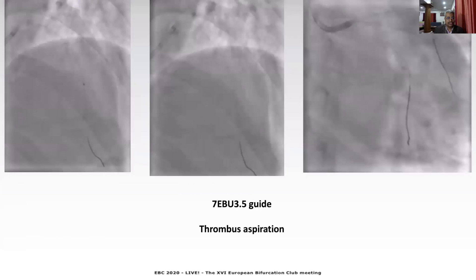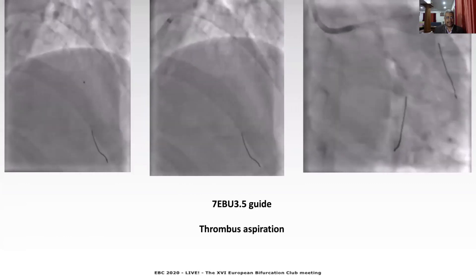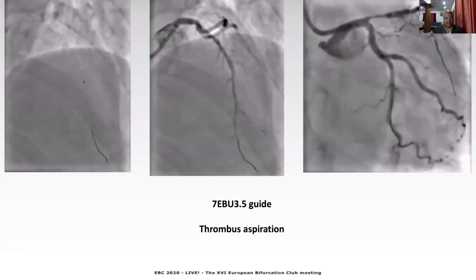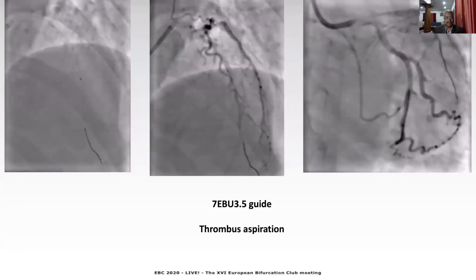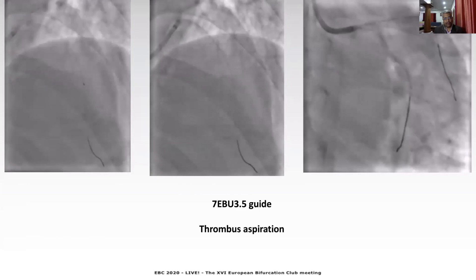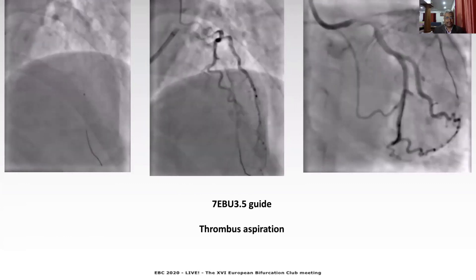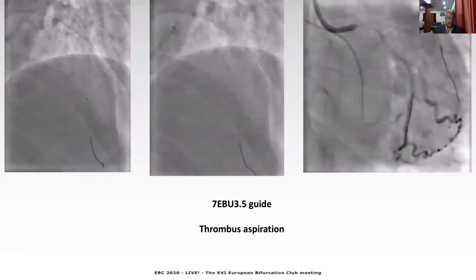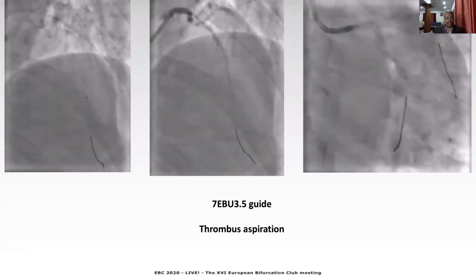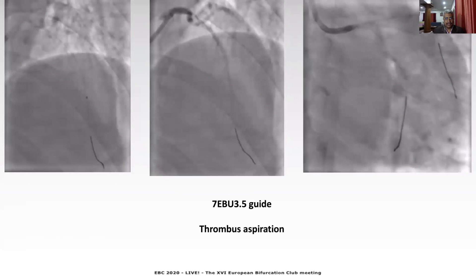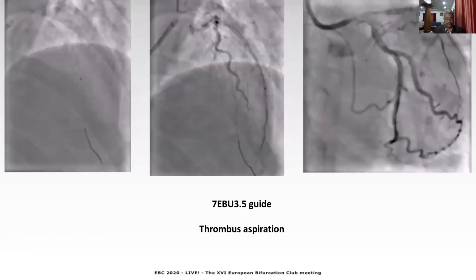A 7 French extra backup guide was used, the vessel was wired, and multiple runs of thrombus aspiration were performed. This restored flow and the patient became hemodynamically stable with relief from chest pain and resolution of ST deviation.